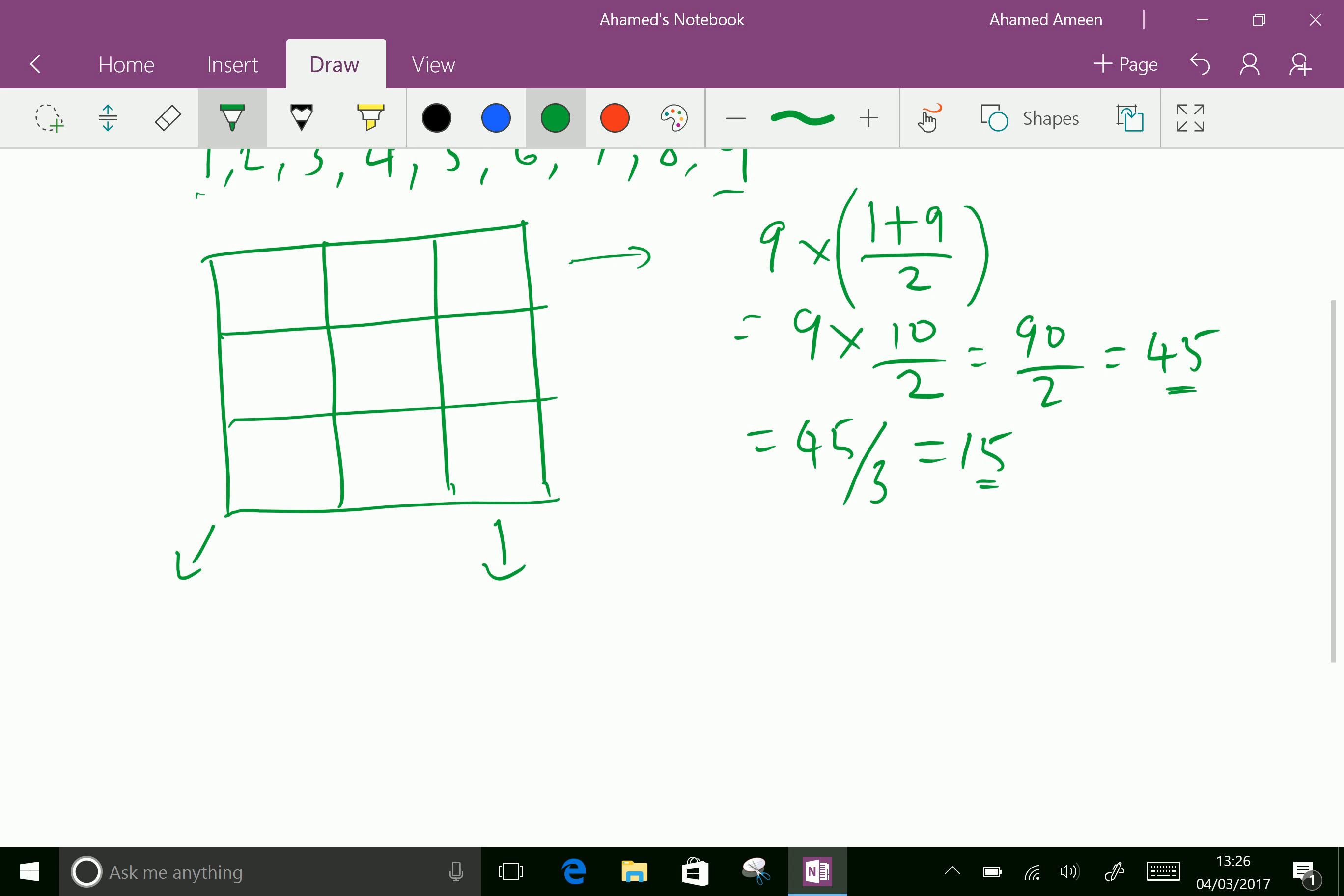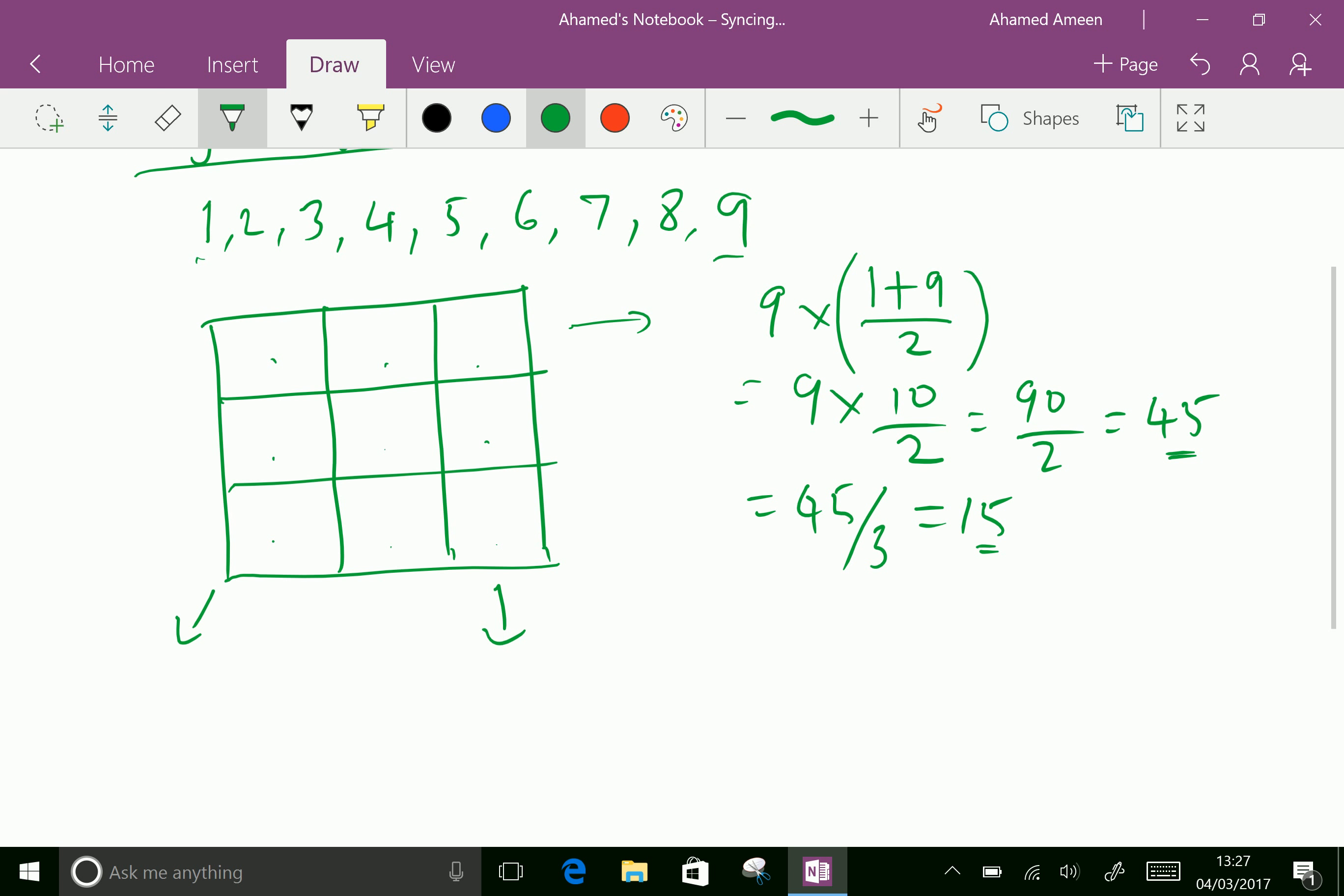So you have to fill this 1 to 9 in these squares. So we should get addition of that numbers in one row the same as other rows and other columns. So how to fill it? First, 1 to 9, the middle number is 5. Fill that 5 in the middle square.